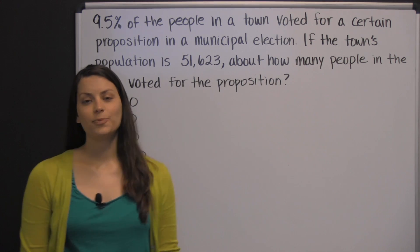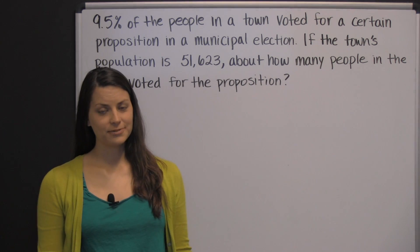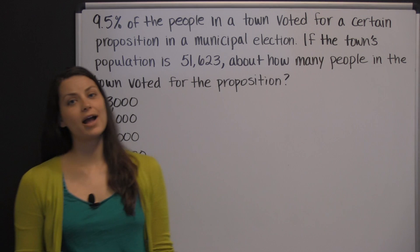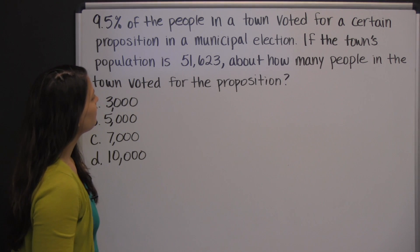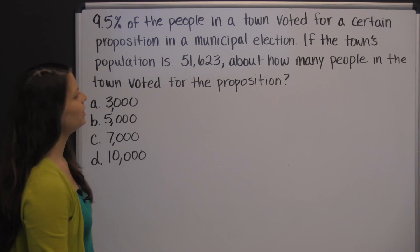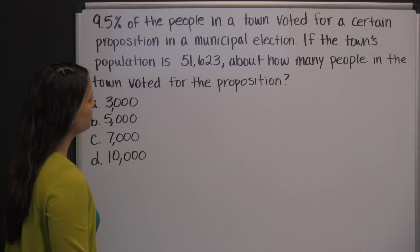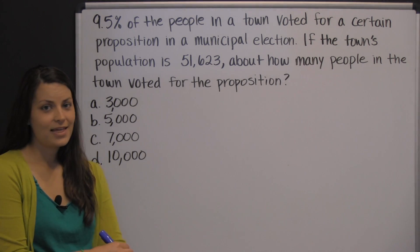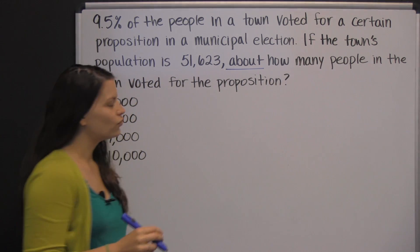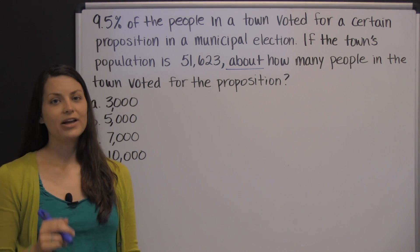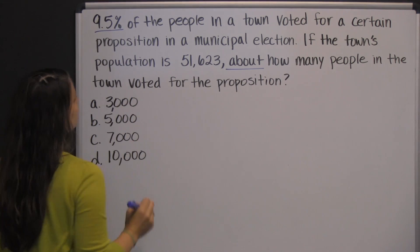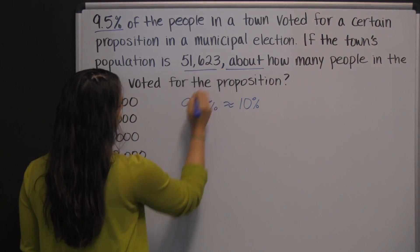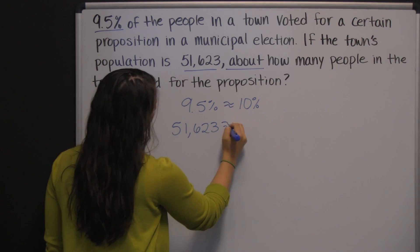One of the math sections on the Accuplacer exam is the arithmetic section. Here's an example of an arithmetic question: nine and a half percent of the people in a town voted for a certain proposition in a municipal election. If the town's population is fifty-one thousand six hundred twenty-three, about how many people voted for the proposition? That word 'about' is really helpful — it means we don't have to use nine and a half percent. We can round it to ten percent and round fifty-one thousand six hundred twenty-three to fifty thousand.